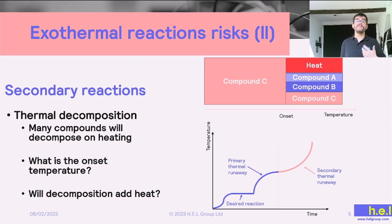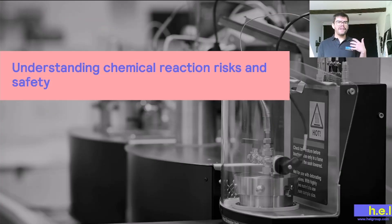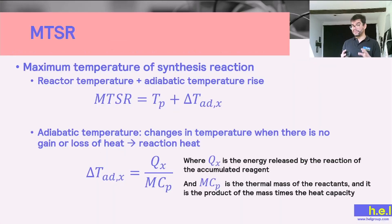So understanding chemical reactions is something that we can use with calorimetry, and it can teach us so much about risks, and then knowing these risks, we can add safety nets around the chemical reaction. And a very important parameter in the safety of our reactions is the maximum temperature of synthesis reaction, MTSR, and it is quite an easy value to calculate - it's just going to be the temperature of a process plus the adiabatic temperature rise. And the adiabatic temperature rise is defined as the temperature change that is going to happen when there is no gain or loss of heat to the environment, so it's just going to be linked to our reaction heat.